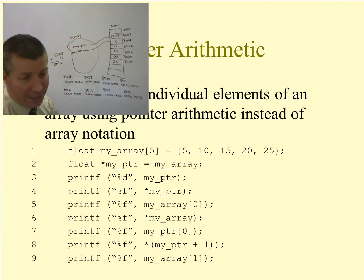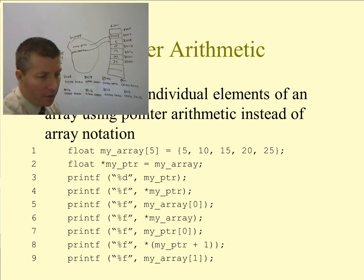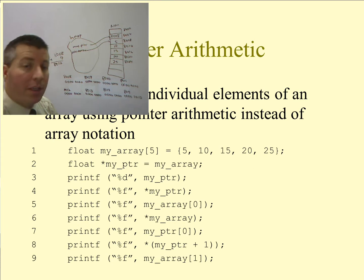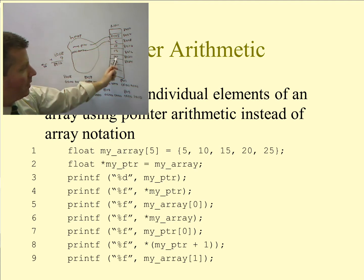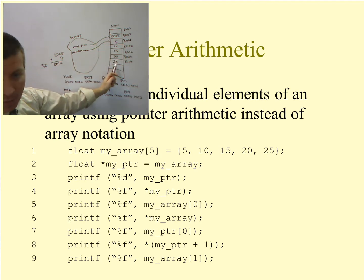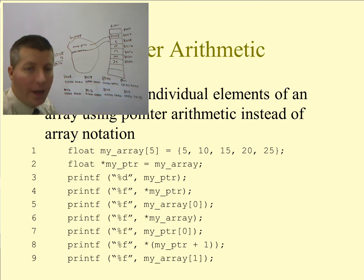Line 9 prints the same thing using array notation — it also prints 10. Now, pointer arithmetic can be dangerous: you can keep adding to a pointer and eventually go outside the range of the array, into unknown memory locations.